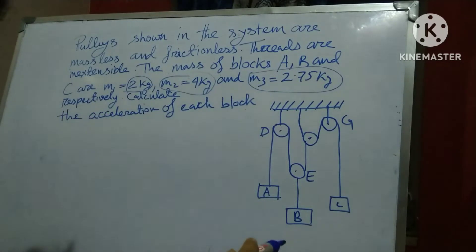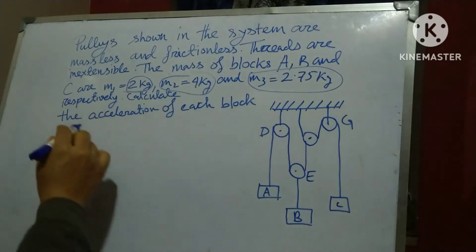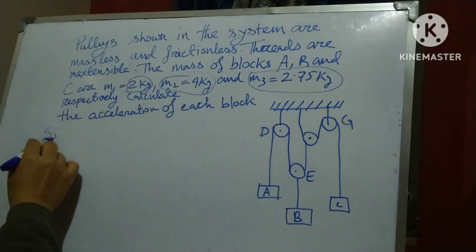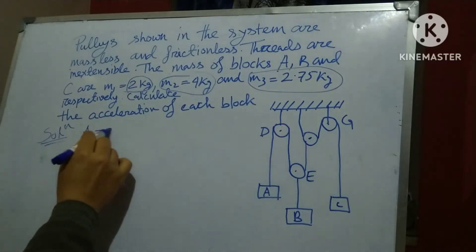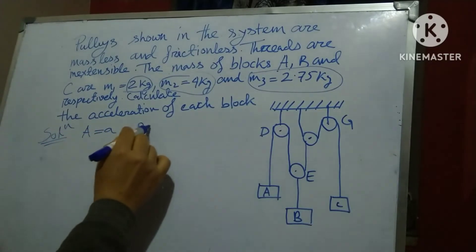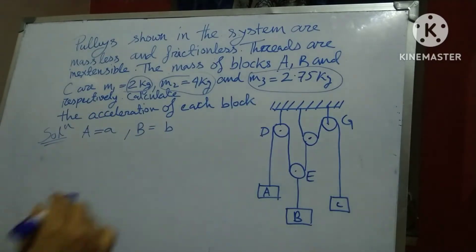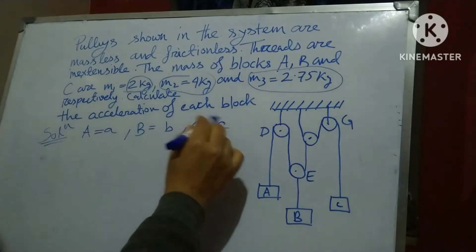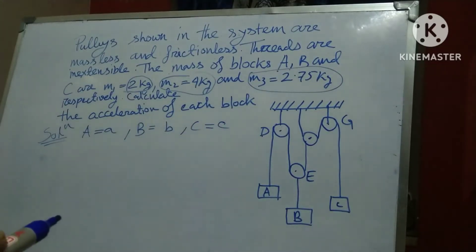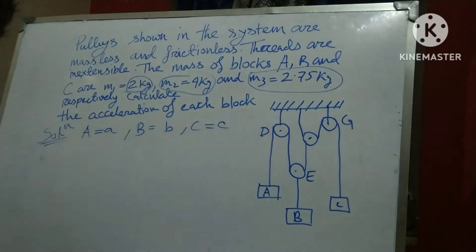So friends, let the accelerations of block A, B, and C be: acceleration of A equals small 'a', acceleration of B equals small 'b', and C equals small 'c'. I hope it is clear. As the length of strings are constant, we will use that constraint.